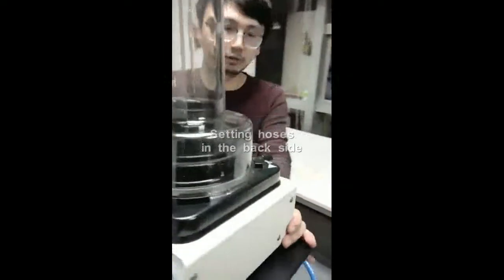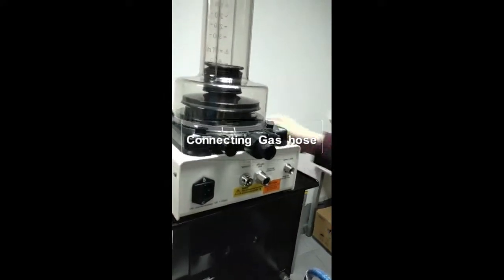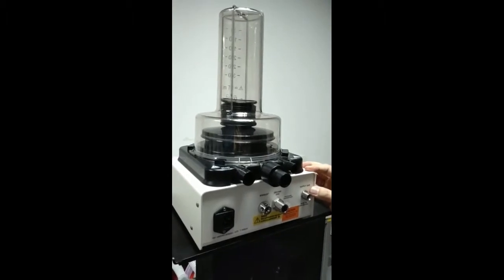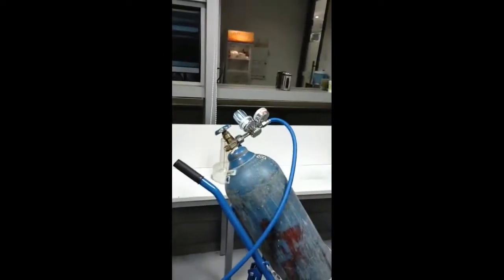Now I am going to introduce how to set up the hoses at the back side. First is the driving gas. The driving gas could be from an air compressor or an oxygen tank. In this case, we use an oxygen tank as driving gas.